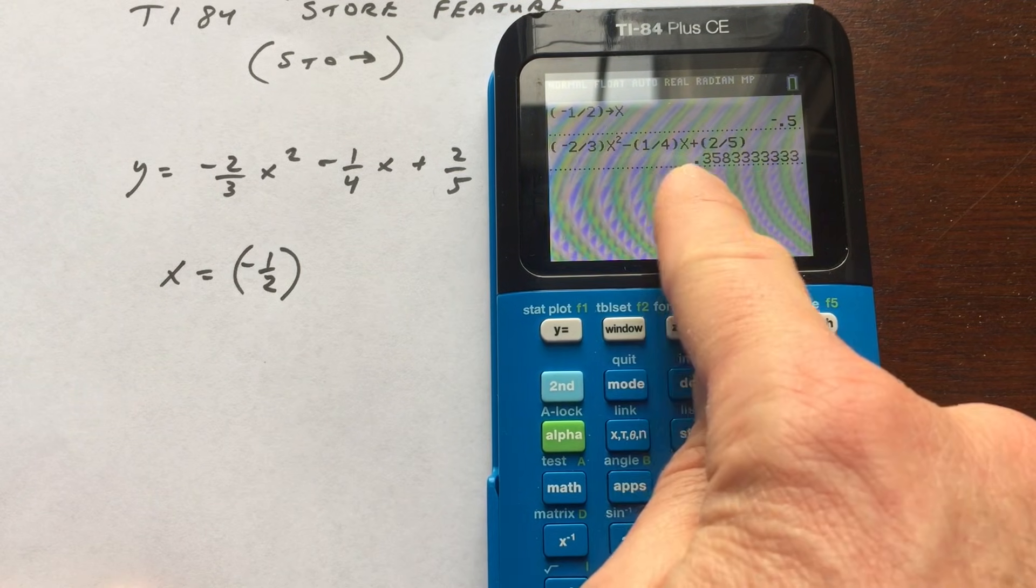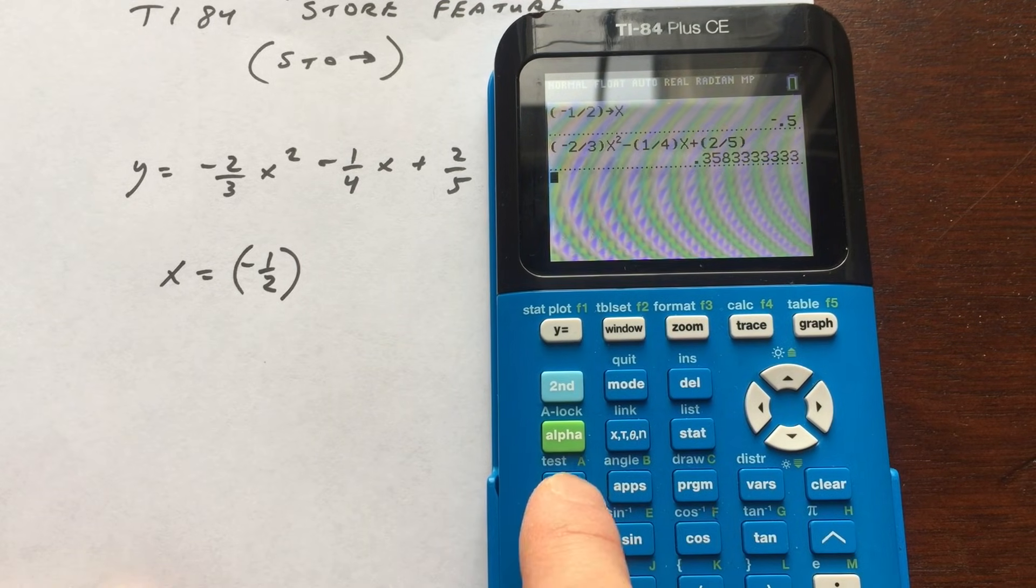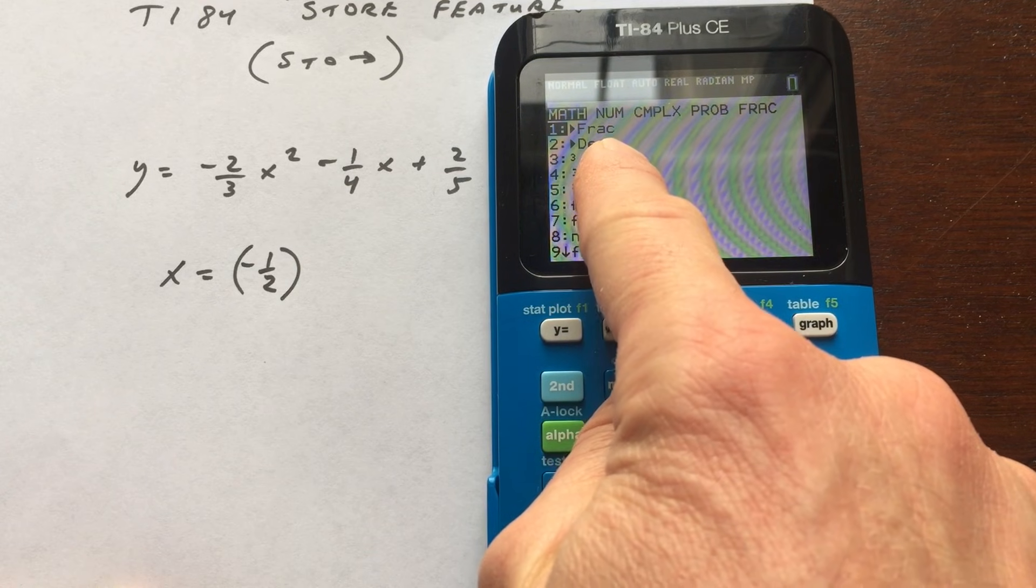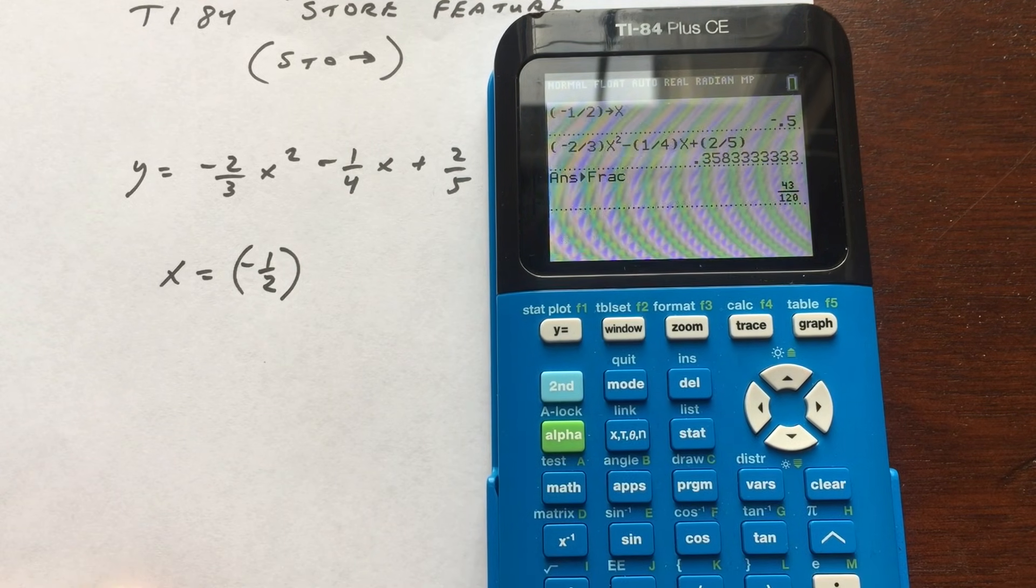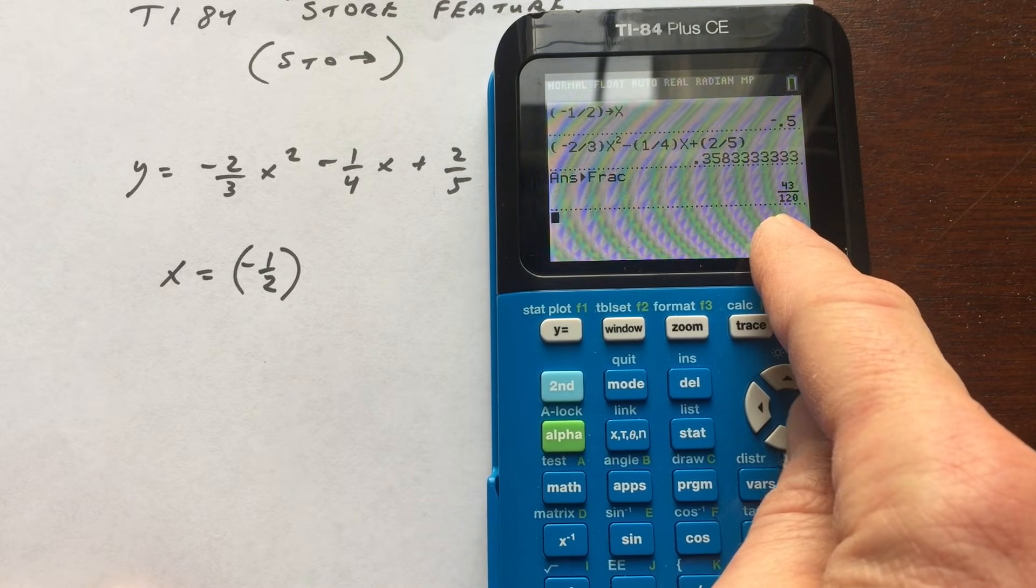Now you can see it's coming out to this long decimal here. Now what we can do, if we want to write it as a fraction, is we can go over here to math on the left side. See math? And then see that first one that says FRAC fraction? We're going to press enter, and enter one more time, and you can see it's putting it into a fraction in lowest terms for us. So 43 over 120.